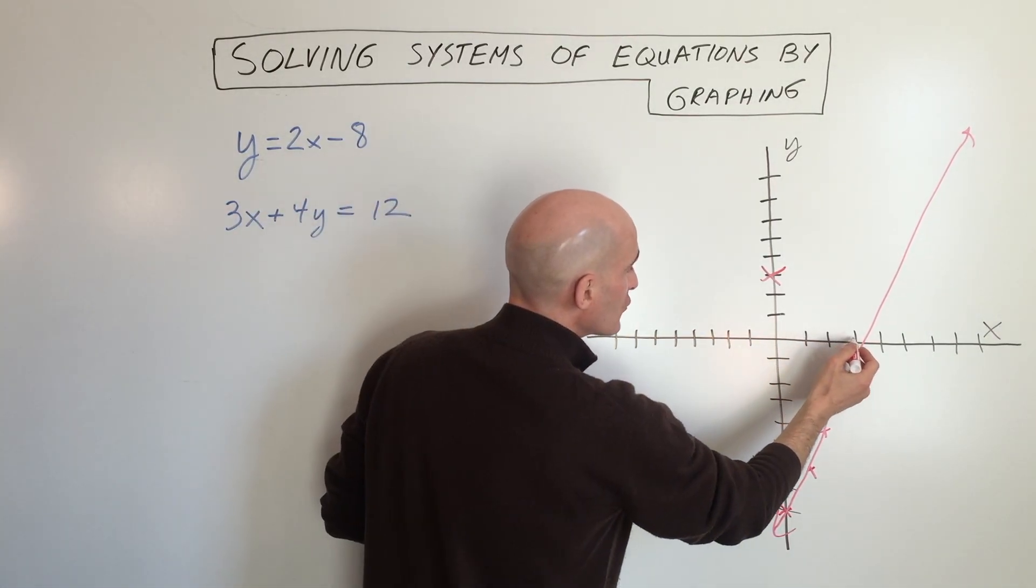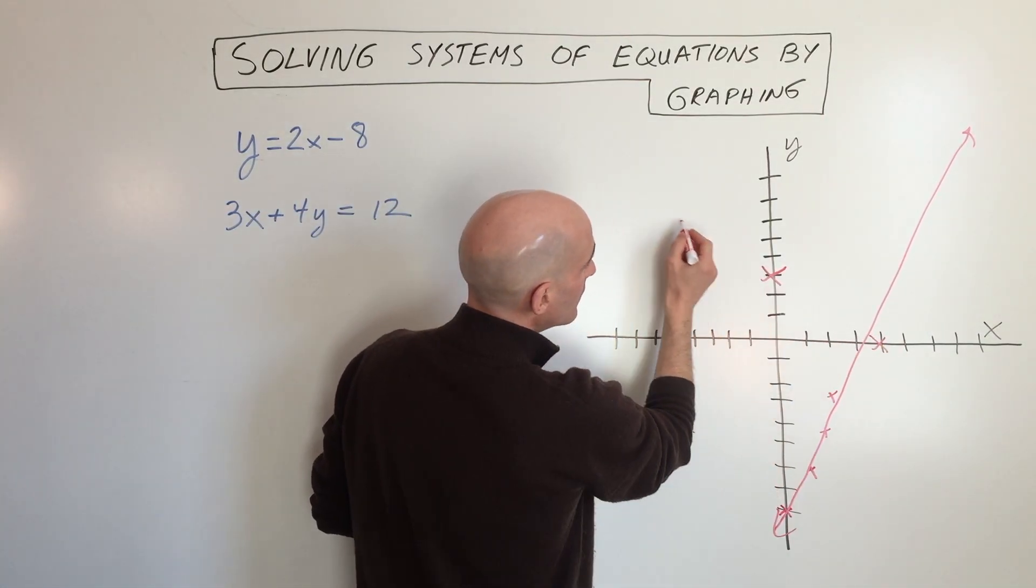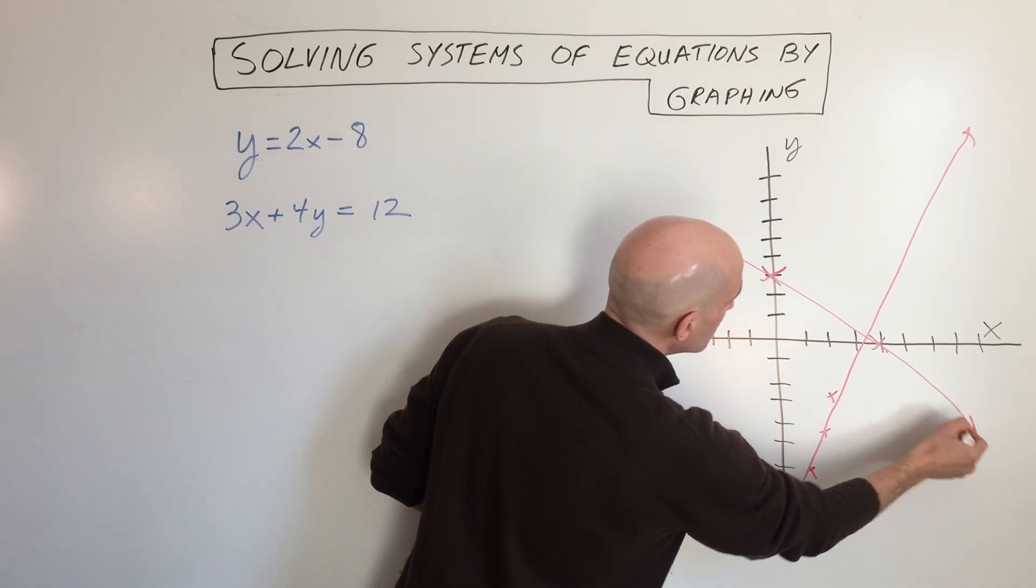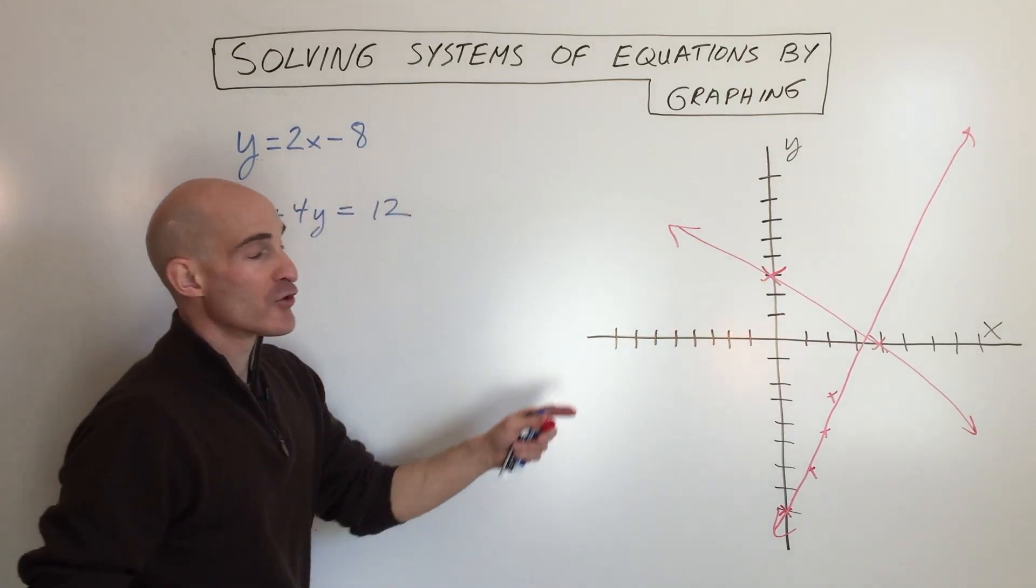So that's going to be at four on the x-axis. Okay, those are our two lines.